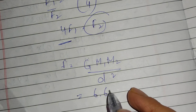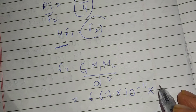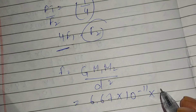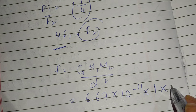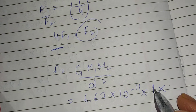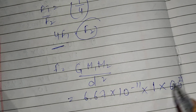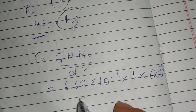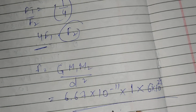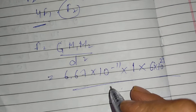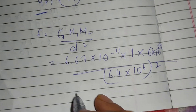The value of G is 6.67 into 10 to the power minus 11. M1, the mass of the Earth, is 6 into 10 to the power 24 kg. M2 is 1 kg. D, the distance — which is the radius of the Earth — is 6.4 into 10 to the power 6 metres.